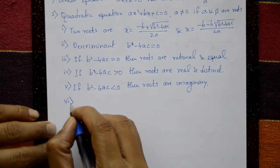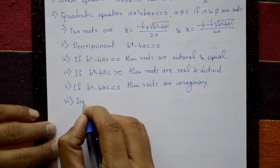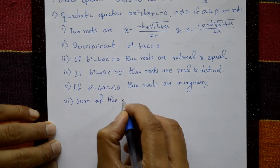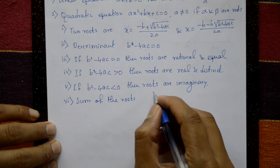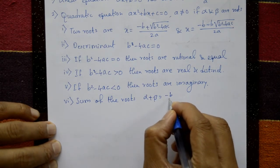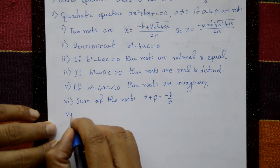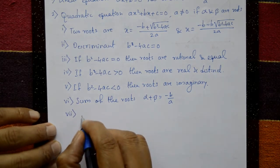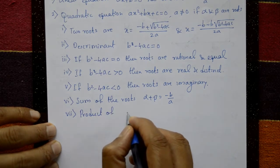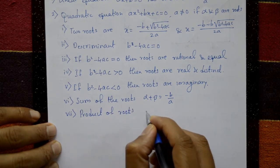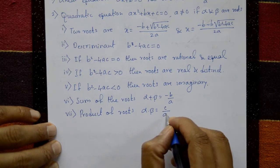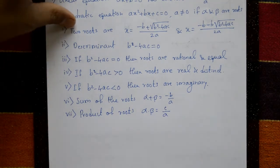Sixth point: sum of the roots. Alpha plus beta equals minus b by a. Seventh point: product of the roots. Alpha into beta equals c by a.